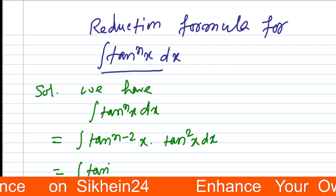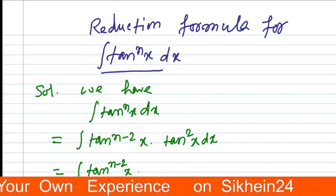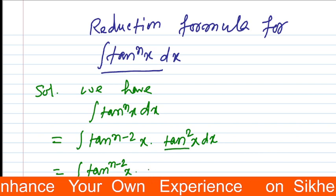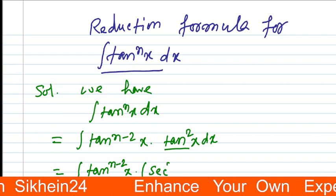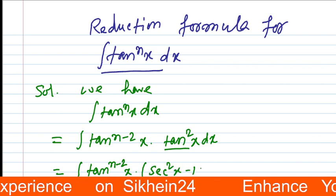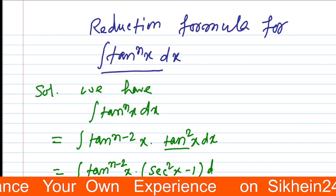Integration tan to the power n minus 2 x and we convert it into respect of sec square. So what is the formula of tan square x? Sec square x minus 1, dx.